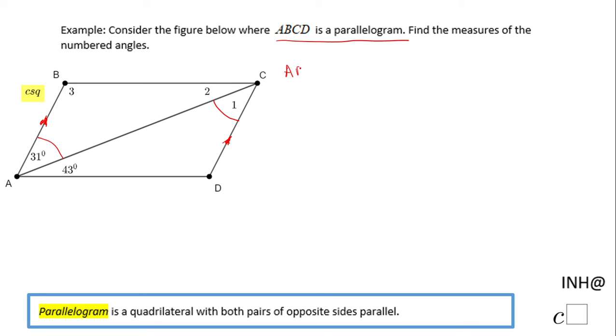So AB and DC are parallel segments or lines. That means angle BAC is congruent to angle DCA because they are alternate interior angles.